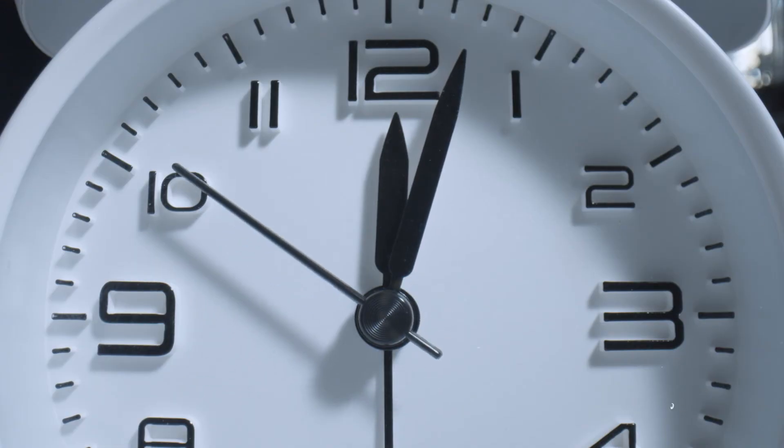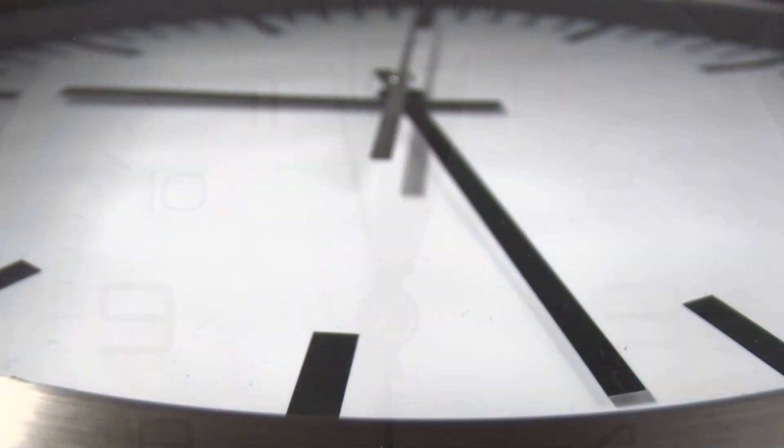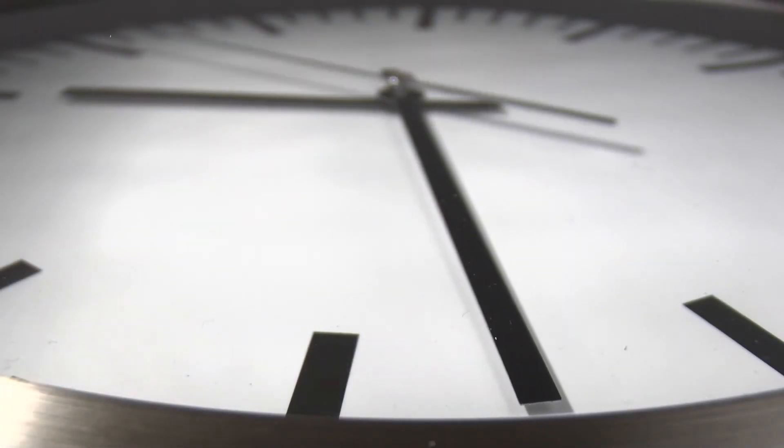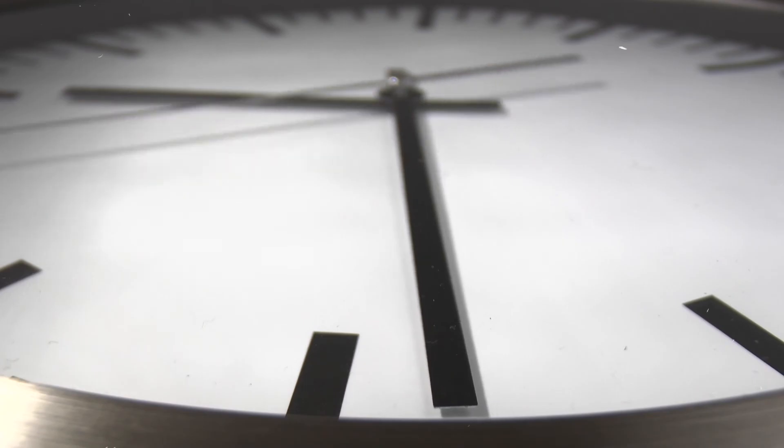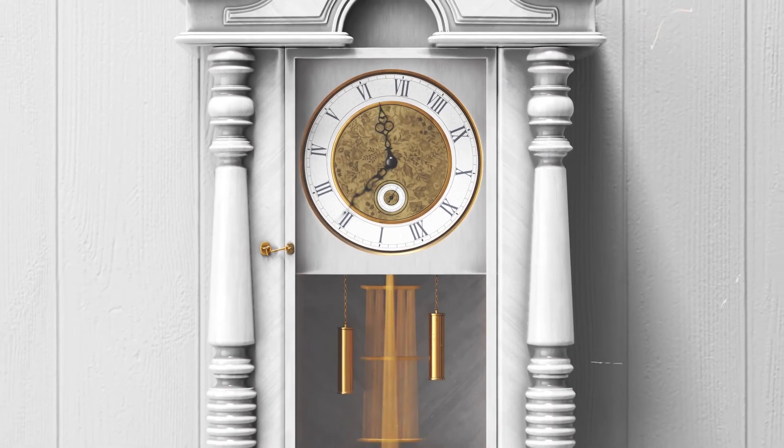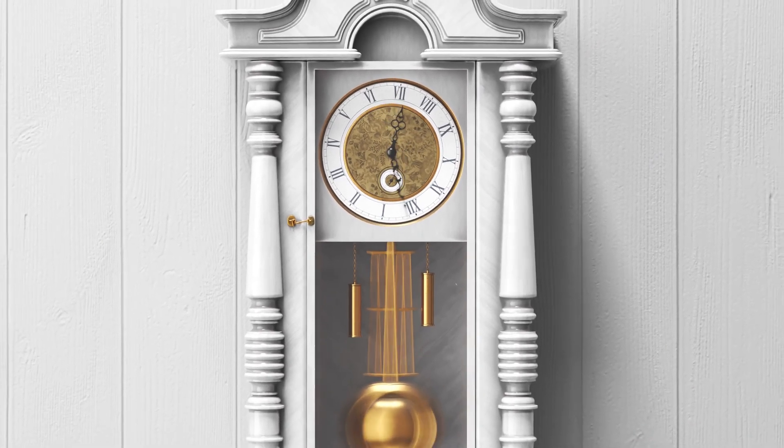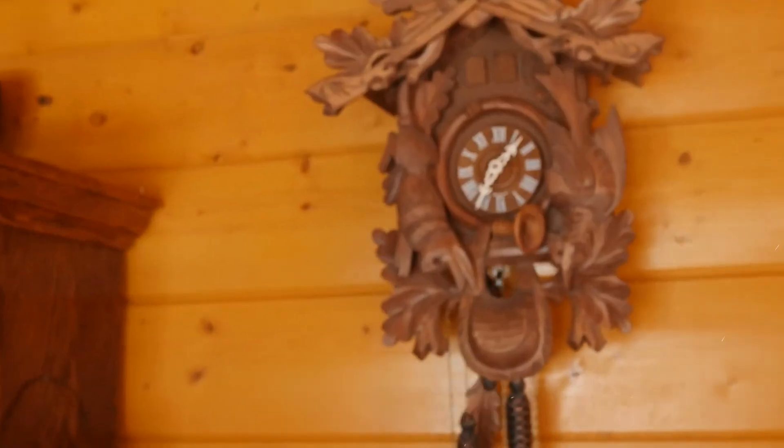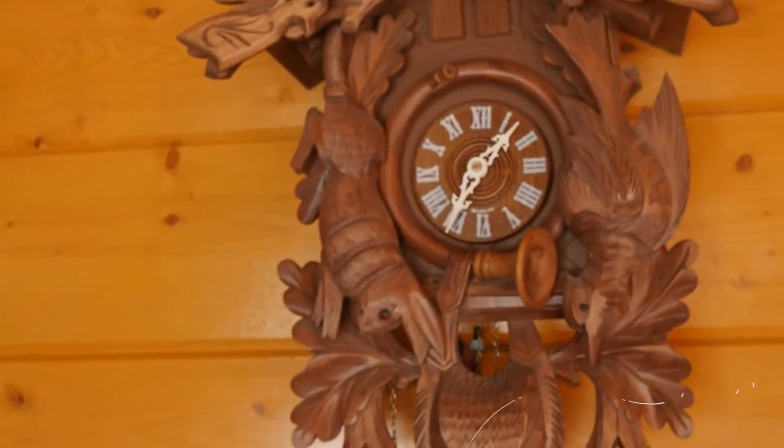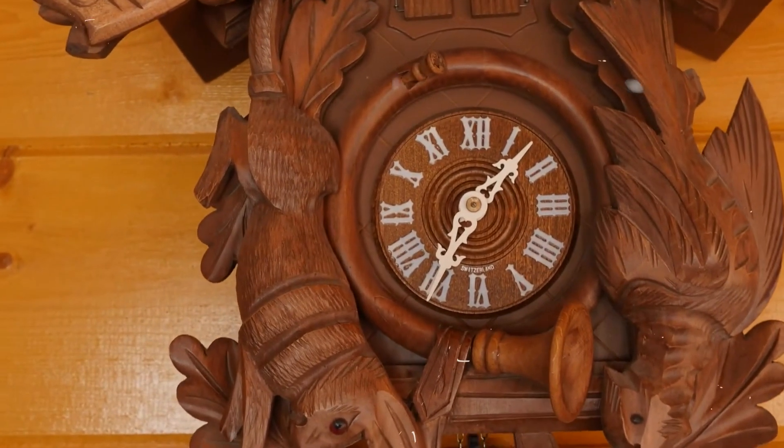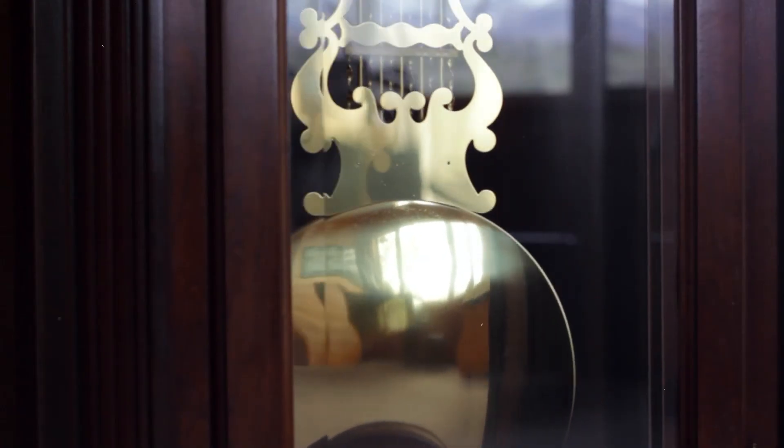Let's start with how clocks measure time. The fundamental concept is that clocks count the ticks of a resonator to keep track of time. In traditional pendulum clocks, the resonator is a swinging pendulum. This mechanism keeps time by counting the oscillations of the pendulum as it swings back and forth, typically at a rate of one swing per second.